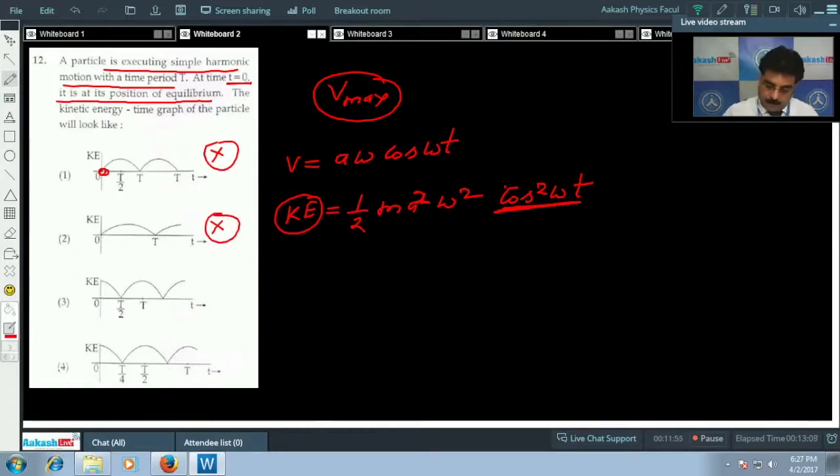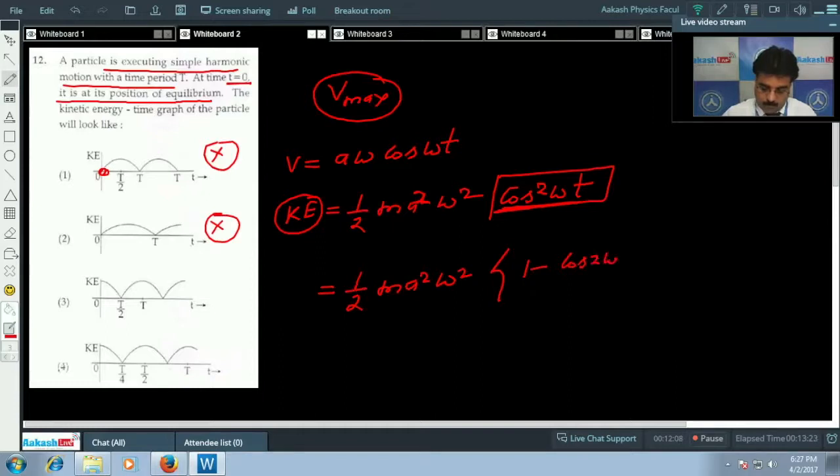But if I concentrate here on cos squared omega t, I can convert this expression as half m A squared omega squared times 1 minus cos 2 omega t divided by 2. Here you could see frequency is 2 times omega, so time period will be half. So graph number 3 is not possible. In this stage we can conclude option 4 will be correct.